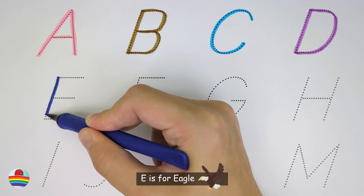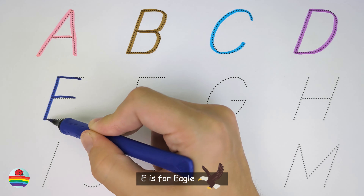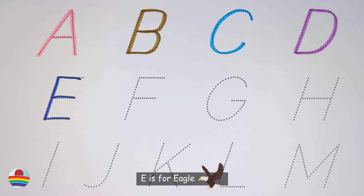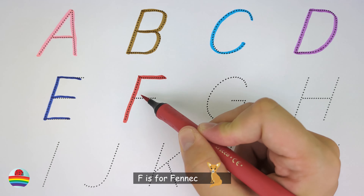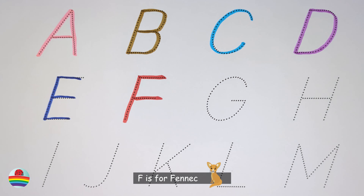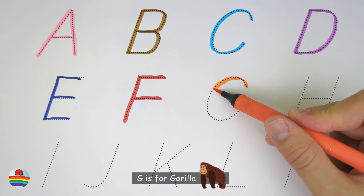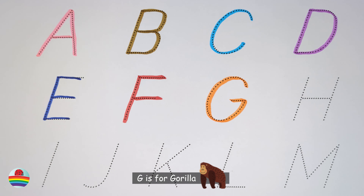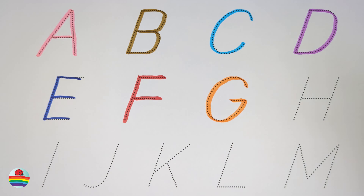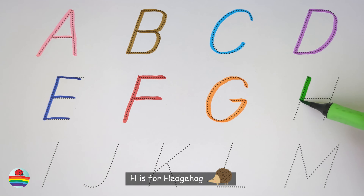E. E is for eagle. F. F is for fennec. G. G is for gorilla. H. H is for hedgehog.